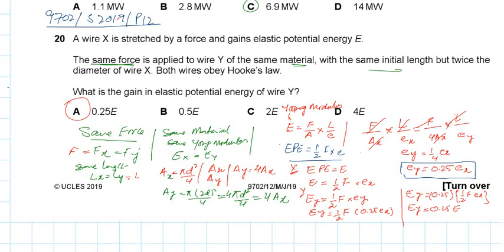It is the same material. Same material means the Young's modulus E is the same. Ex equals Ey. Young's modulus of X equals the Young's modulus of Y.